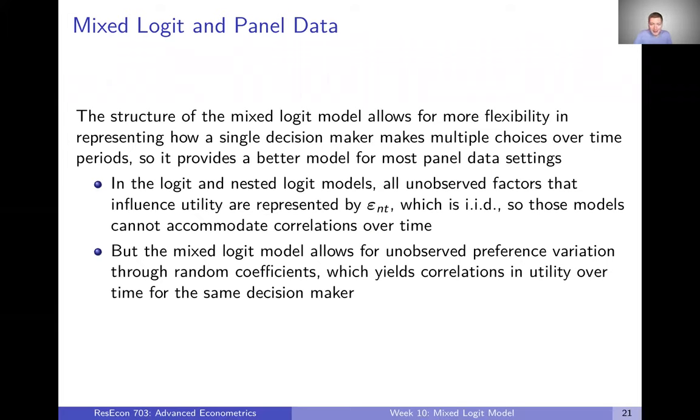The underlying idea here is that in the logit and even the nested logit and other generalized extreme value models, the unobserved factors that influence utility were represented by epsilon. And if this is a panel, then we could think about having for each individual and each time period T, we have a vector of epsilons representing each alternative, but every one of these epsilons is IID.